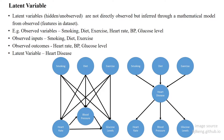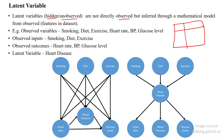This video explains latent variables and missing data. Latent variables in machine learning are called hidden variables or unobserved variables — they are not directly observed. Suppose you have a given dataset like the one shown here.